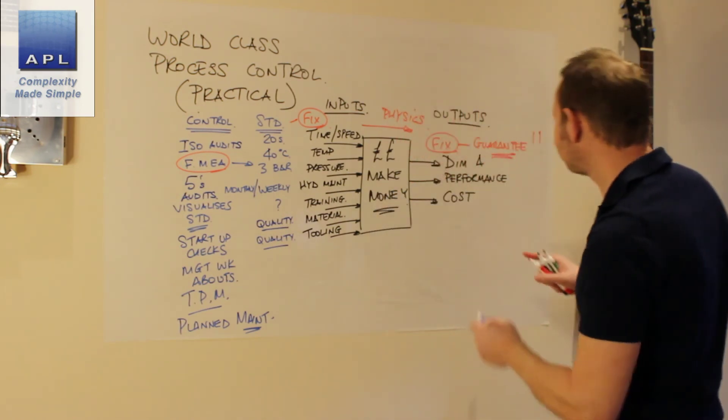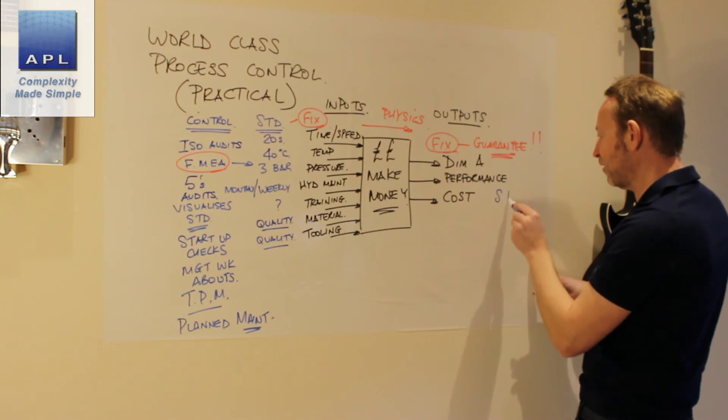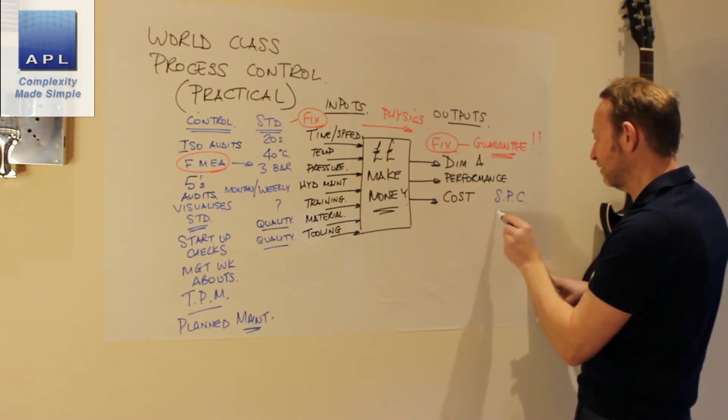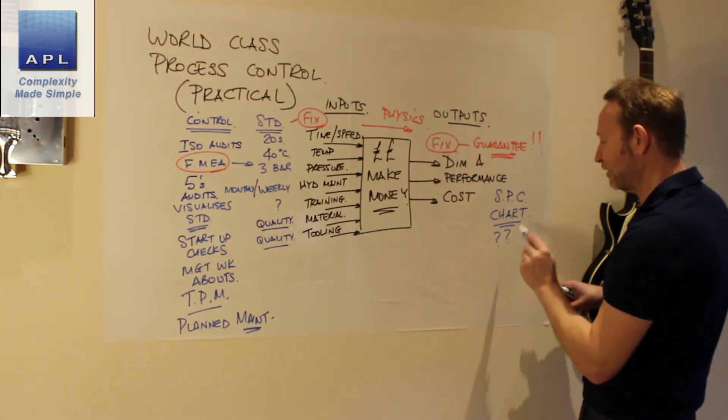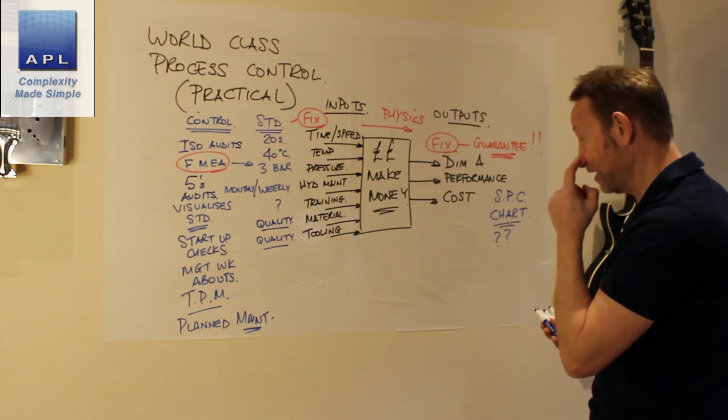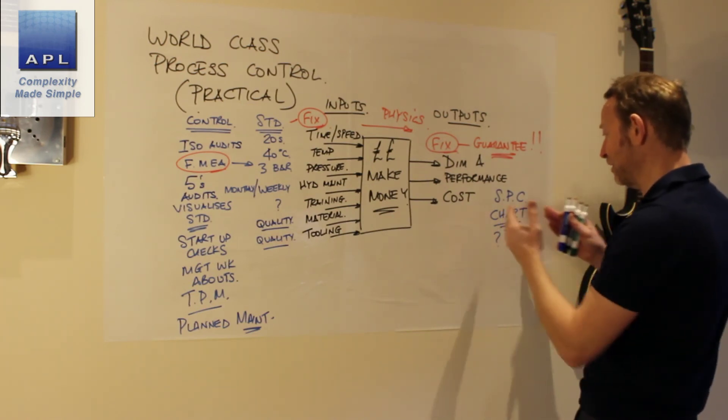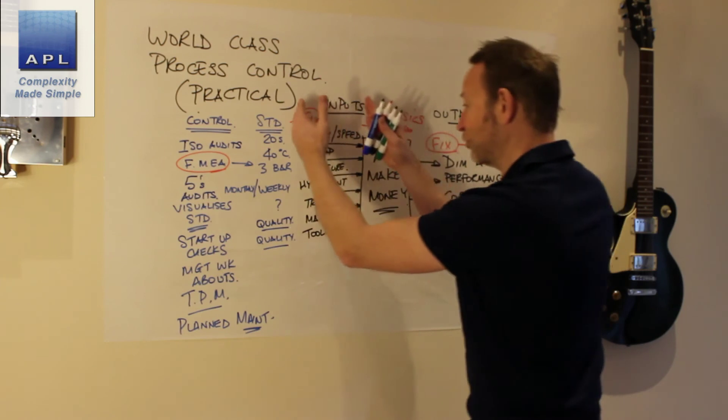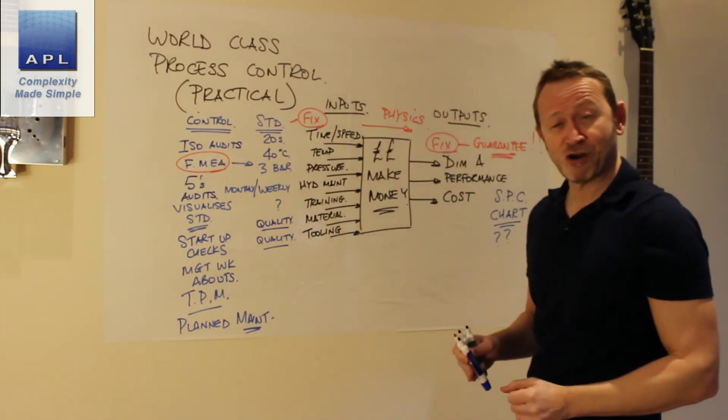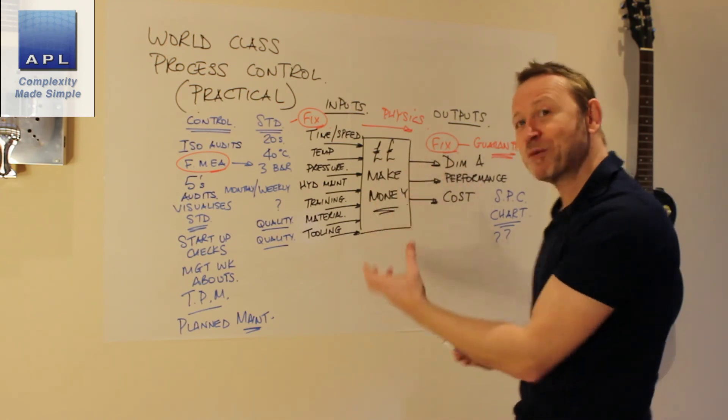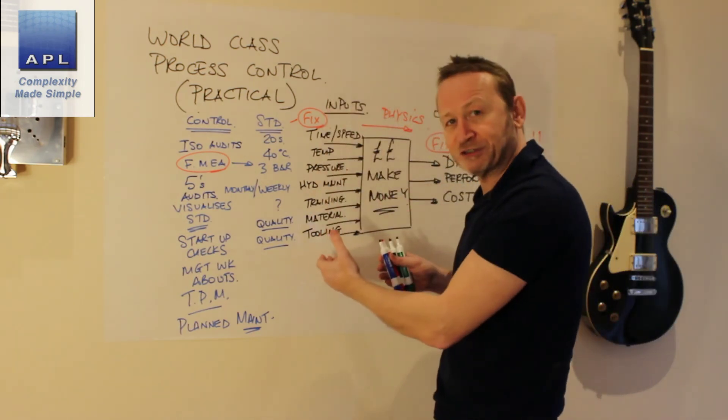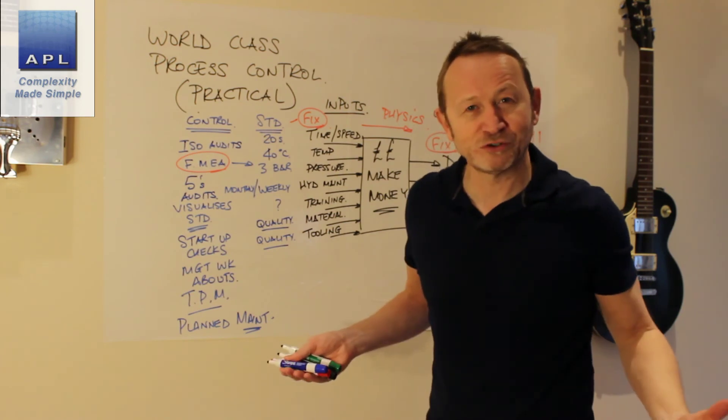Now, of course, you could put an SPC chart over here to help you see if you have an abnormality. That's fine. But the first thing you're going to do, the minute you get a problem, you're going to audit all of these controls. That's all process control is. That's all problem solving is. But if you haven't specified this, how can you problem solve? I've got to look at hundreds of inputs. I don't know where they're supposed to be.